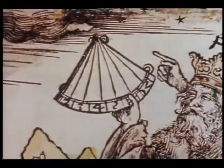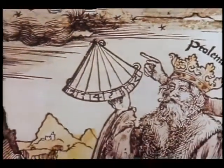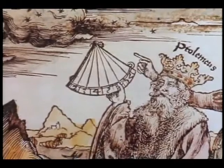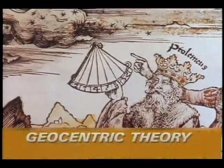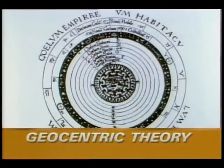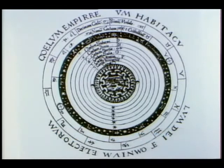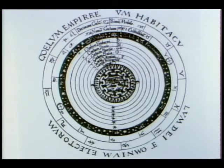Later, about 150 AD, Ptolemy presented the geocentric theory — the belief that the earth is stationary at the center of the universe, with the sun, moon, stars and planets revolving around it in complex orbits.